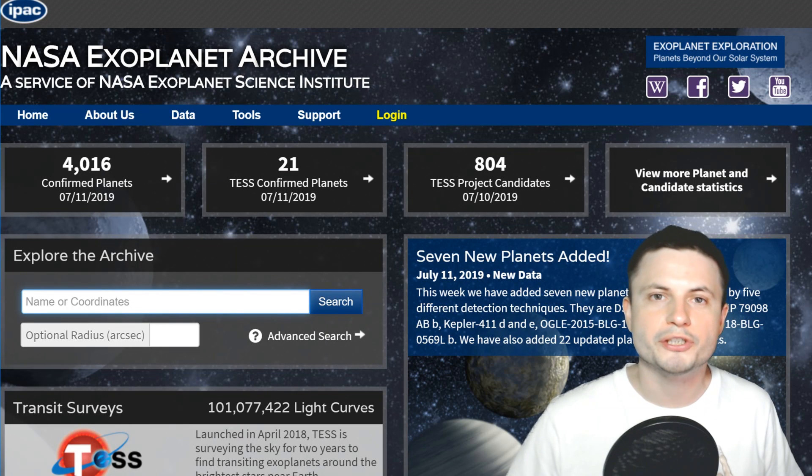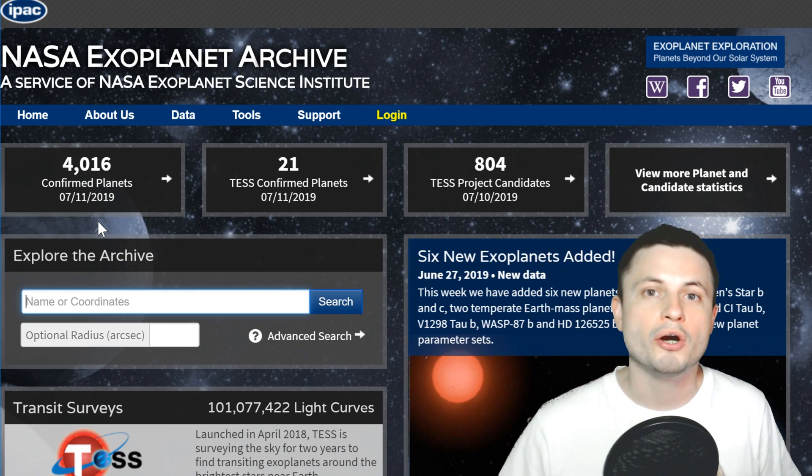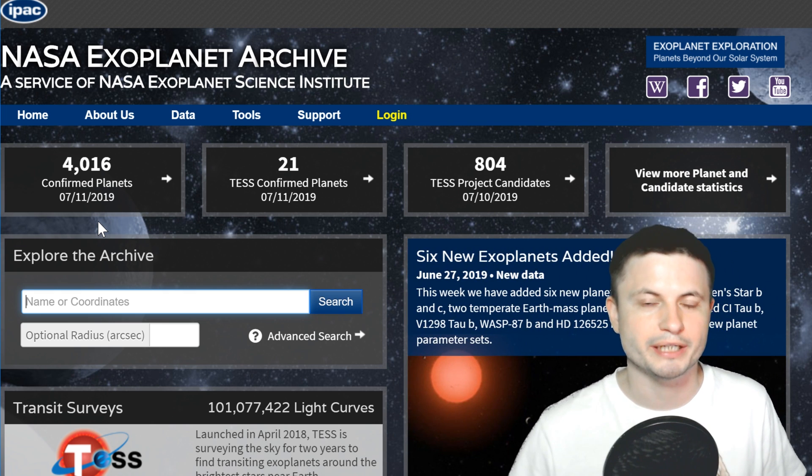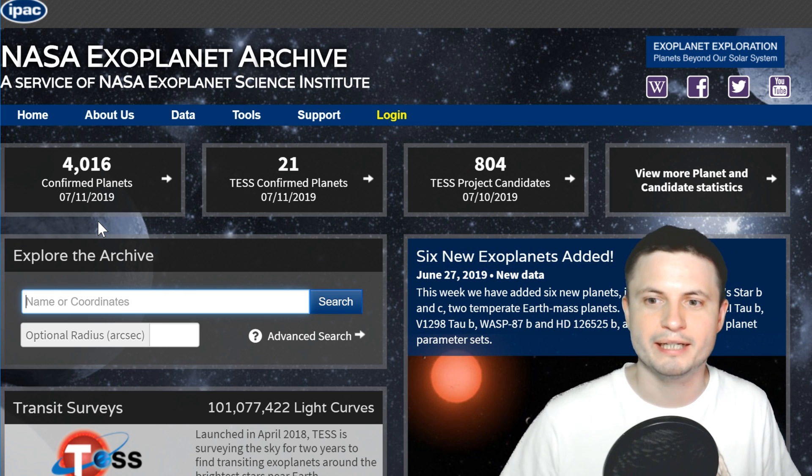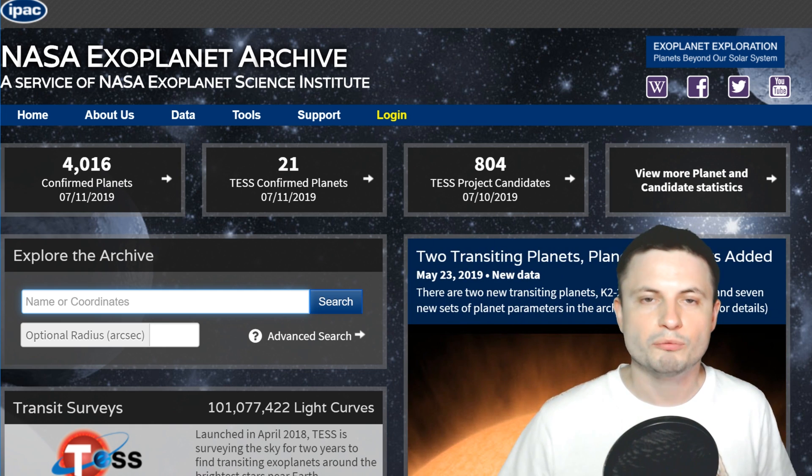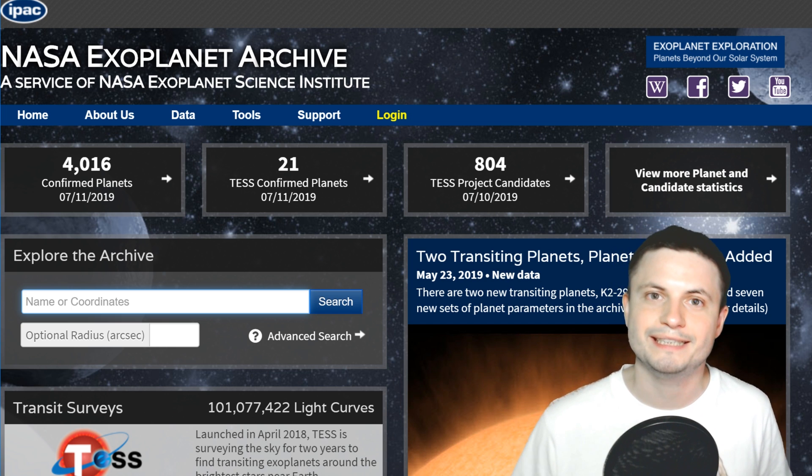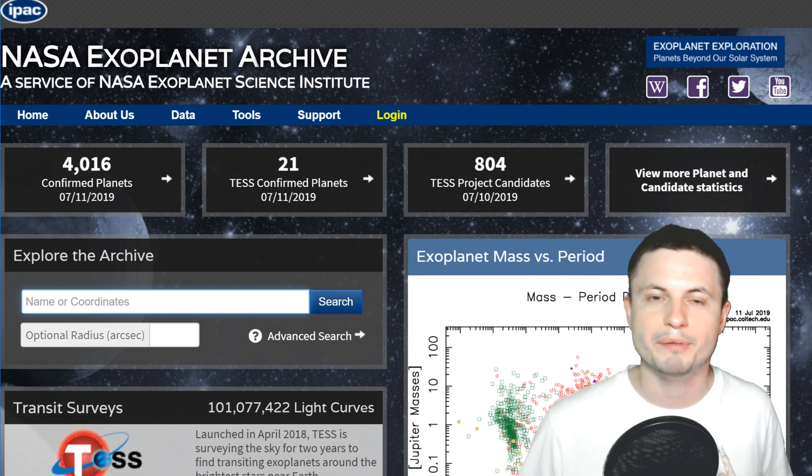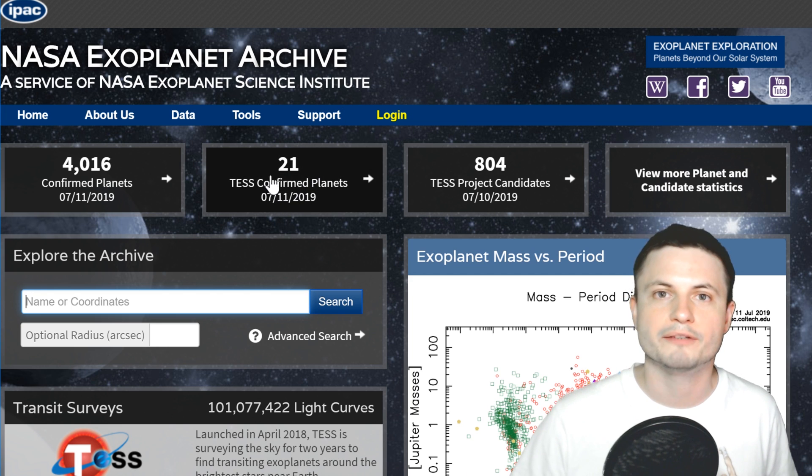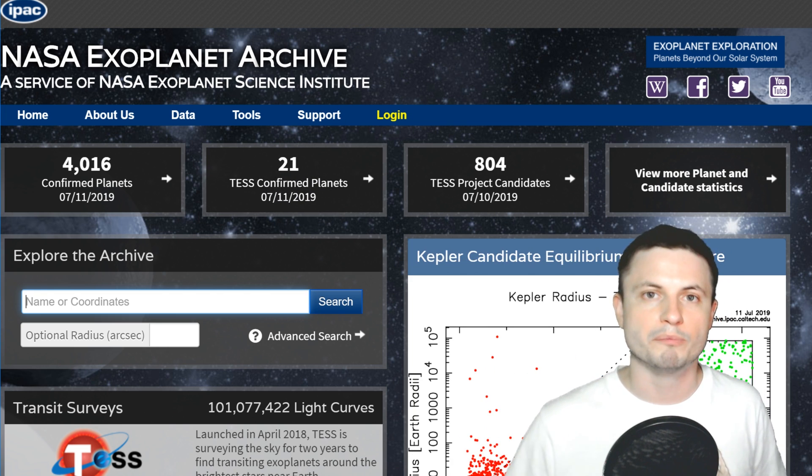So the official count of the confirmed planets as of right now is 4,016, although when you're checking it, it's probably going to be a little bit higher. As a matter of fact this goes up by one or two every few days or so. In other words we've now officially determined and confirmed 4,016 planets out there in the universe, and we know that there's going to be more and more coming as new telescopes like TESS that's already confirmed 21 planets going to make more new discoveries.